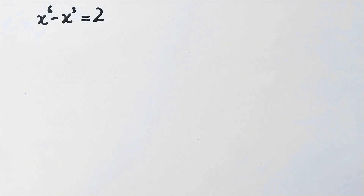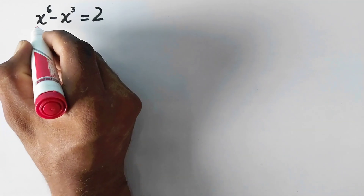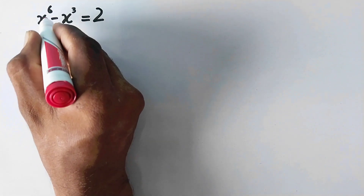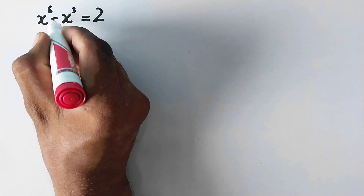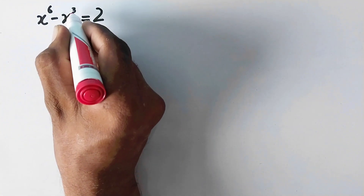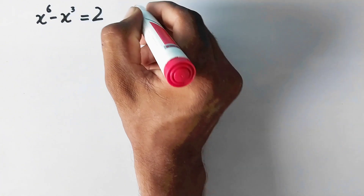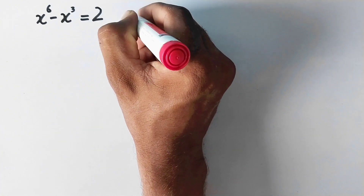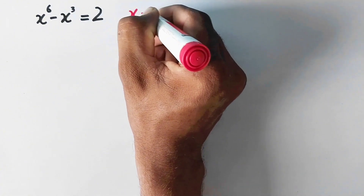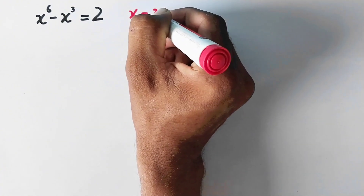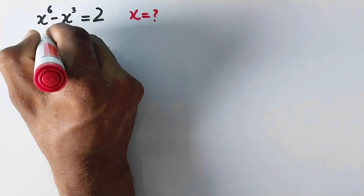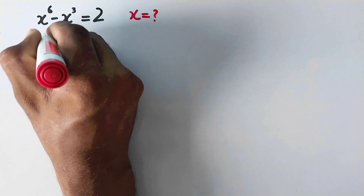Hello everyone, welcome to ExplodeMaths. Today we are going to solve the question: x raised to the power 6 minus x raised to the power 3 is equal to 2, and we have to find the value of x. Let us see the solution.